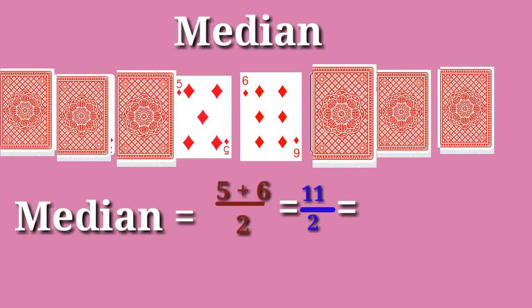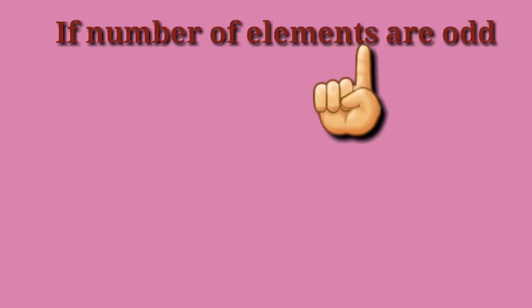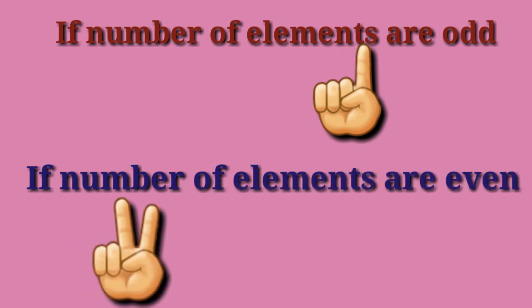So when we are doing median, if the number of elements are odd there will be only one number. If the number of elements are even, then we will have two numbers, and that time we have to take the average.